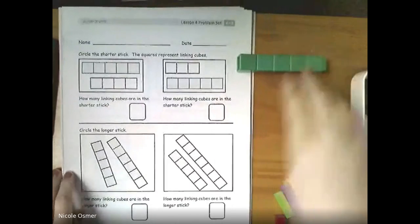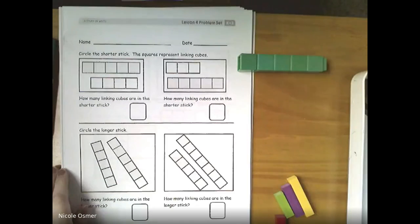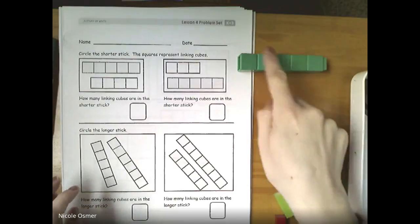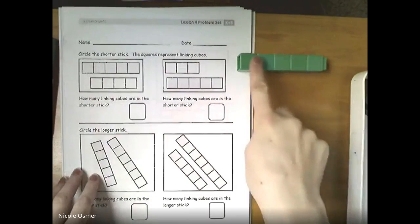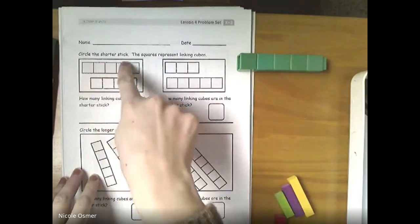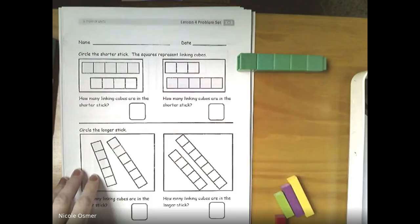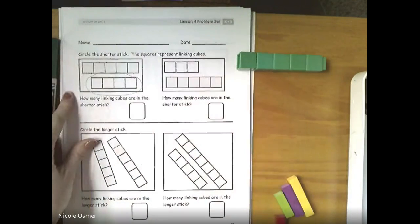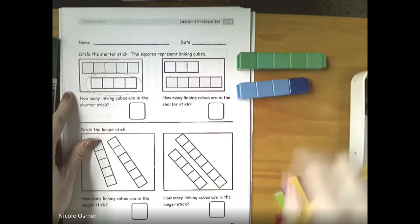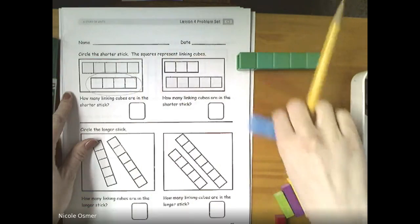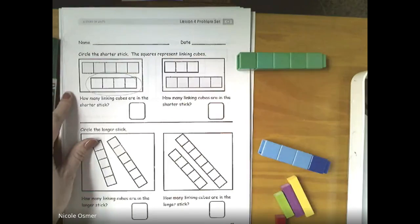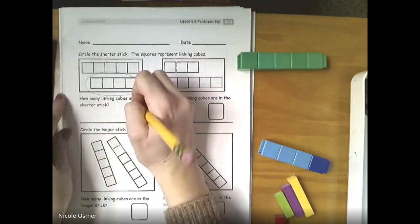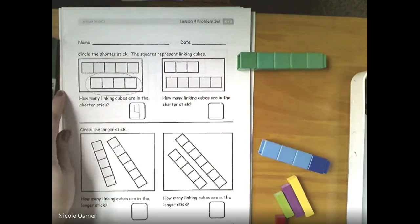Let's take out our paper and do a little work with this. You can still keep your five stick close by. Circle the shorter stick. The squares represent these linking cubes. So these are supposed to be these. Here's the five stick. One, how many? Oh, let's circle it first. Take out your pencil or your crayon. Circle the shorter one. So we circled it just like how we practiced when Mrs. Osmer showed you under the camera. The four was shorter than the five. How many linking cubes are in the short stick? And we knew that was down and over, down some more. That's how you make a number four.